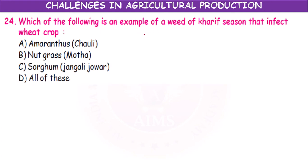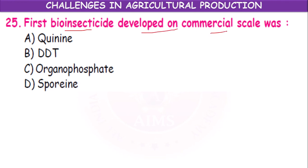Which of the following is an example of a weed of the kharif season that affects the wheat crop? Motha, nut grass, sorghum, and jangli jwar — all of these act as weeds in the kharif season affecting the wheat crop. The first bio-insecticide developed on commercial scale was Sporeine — not quinine, DDT, or organophosphate.